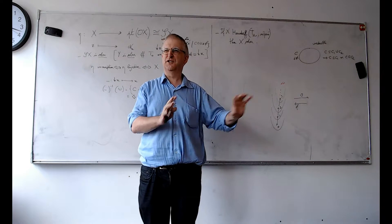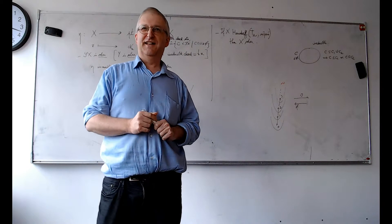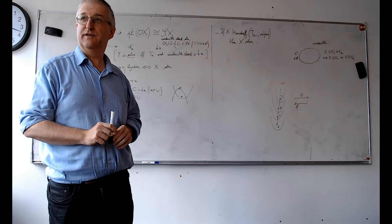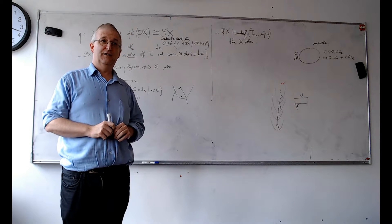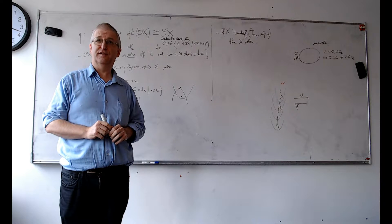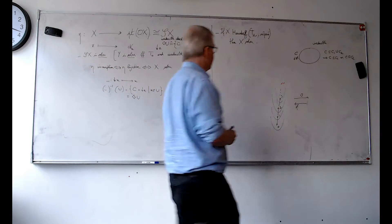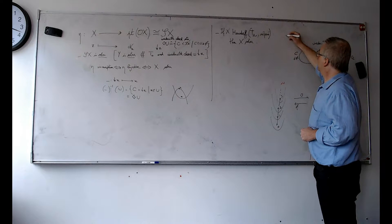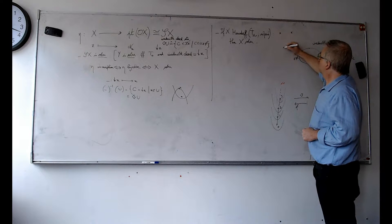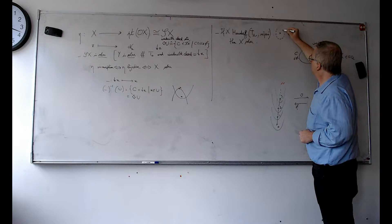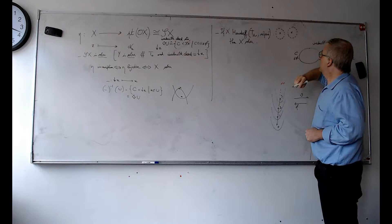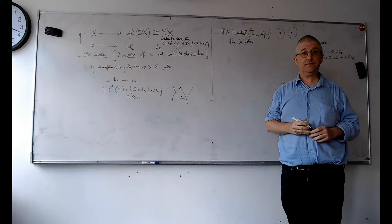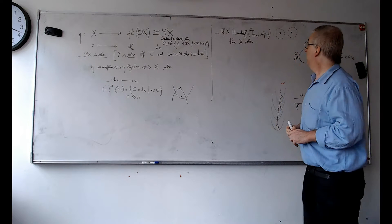There are many separation properties. T0 means: given two distinct points, there's one open set containing one but not the other. T1 means: given two distinct points, there's an open set containing each one but not the other — though you can't require them to be disjoint. T2 (Hausdorff) additionally requires those open sets to be disjoint. T0 is equivalent to the specialization quasi-ordering being an ordering (anti-symmetric). T1 is equivalent to the specialization ordering being equality.